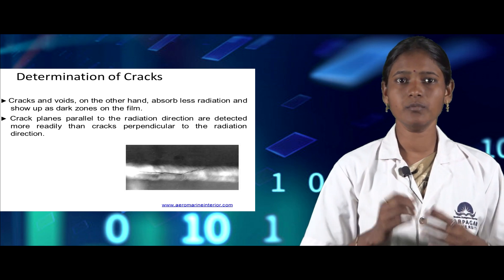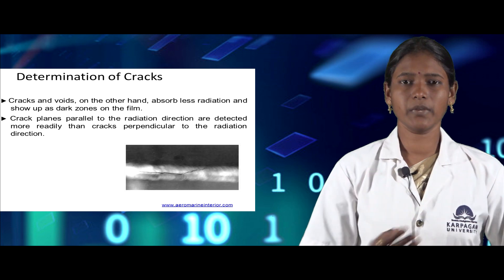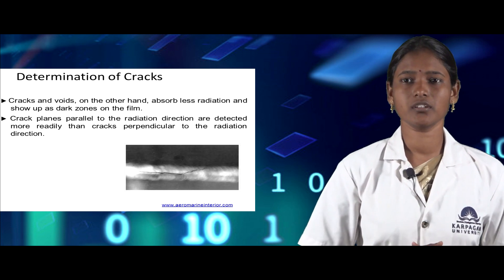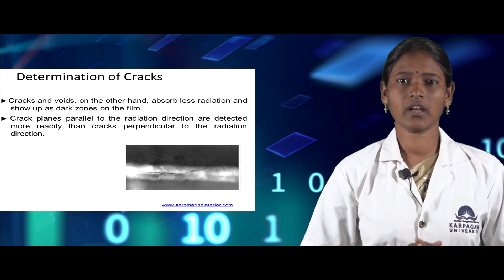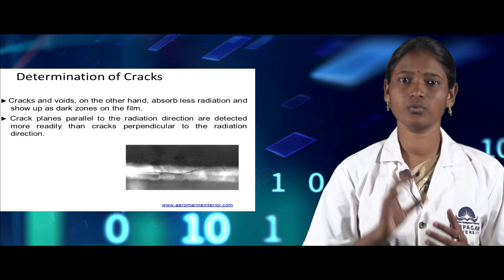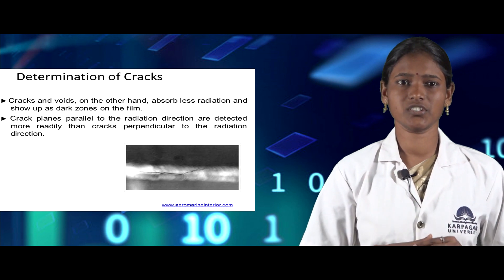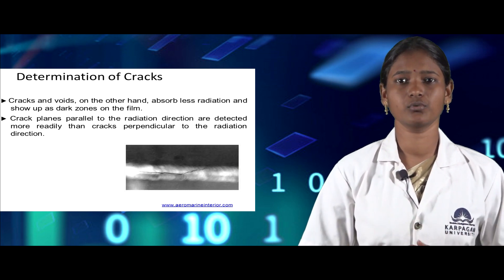Cracks parallel to the radiation direction are more readily absorbed than cracks perpendicular to the radiation direction. Based on the absorption of radiation, cracks are identified: cracks and voids absorb less radiation and show up as dark zones on the film, while cracks parallel to the radiation direction are more readily detected than those perpendicular to it.